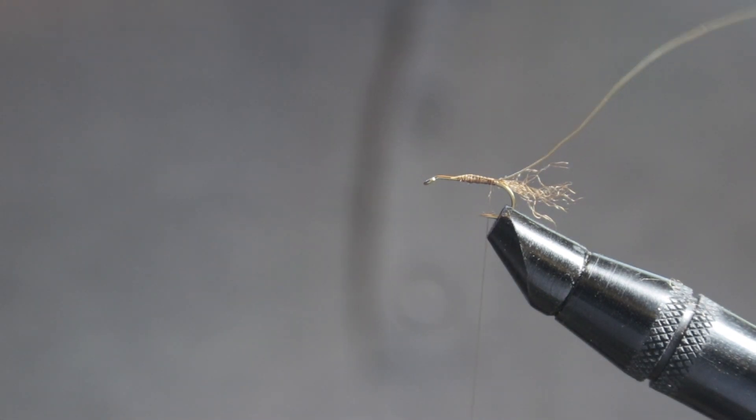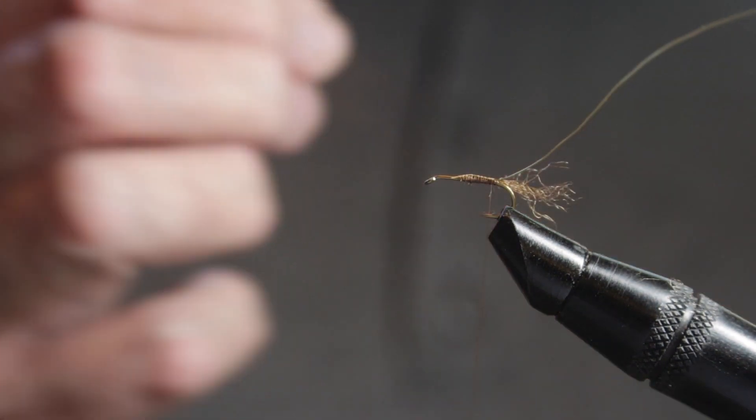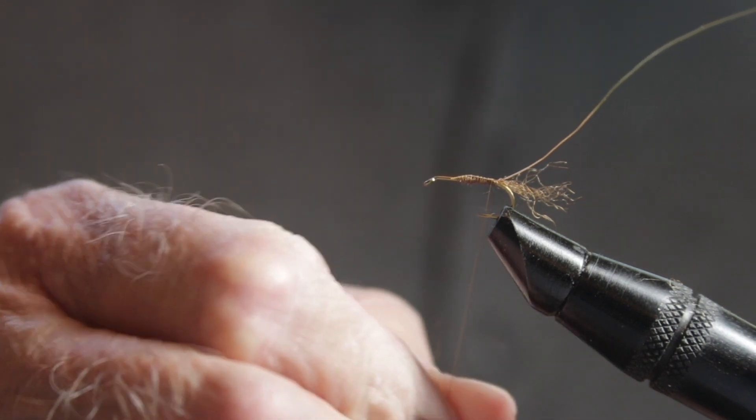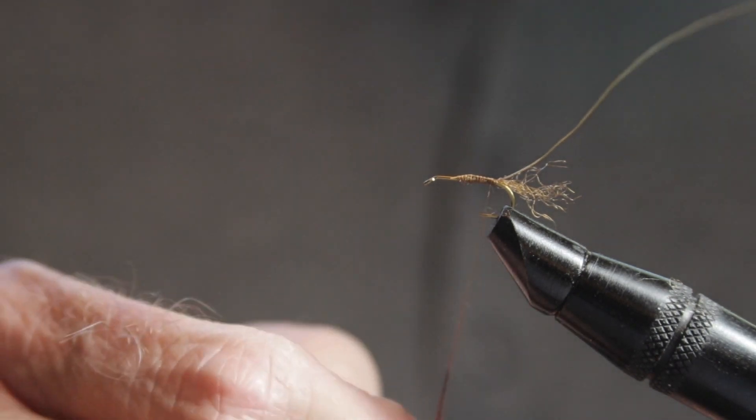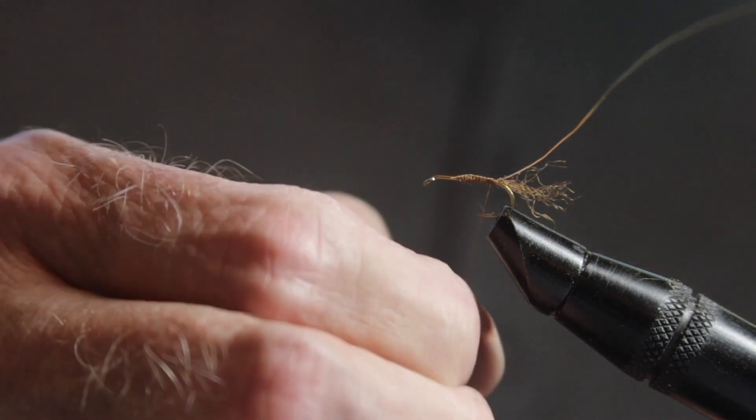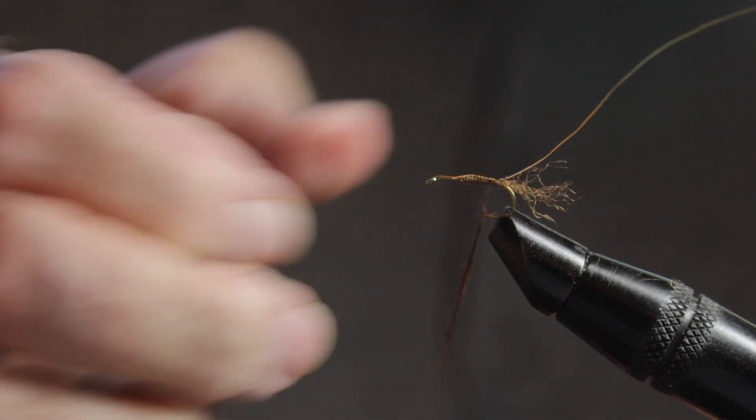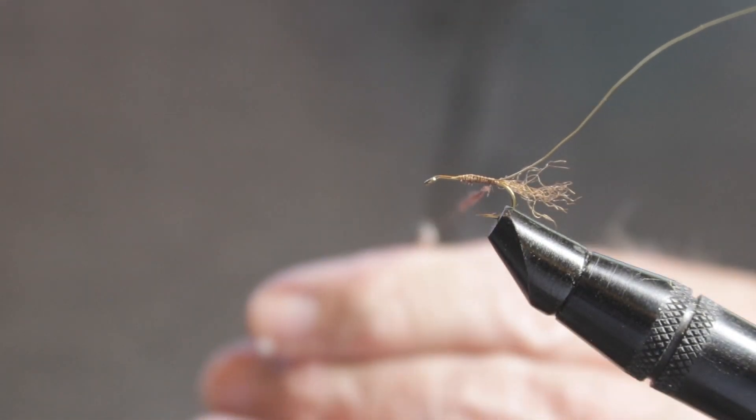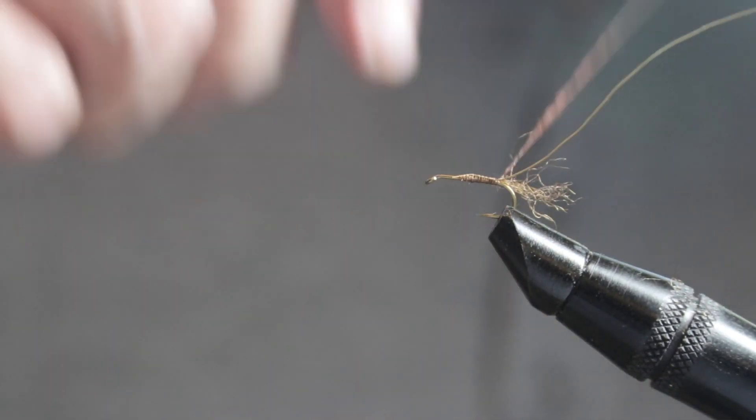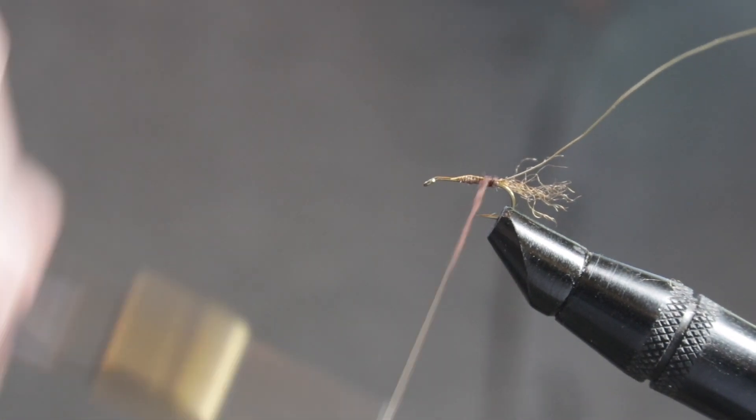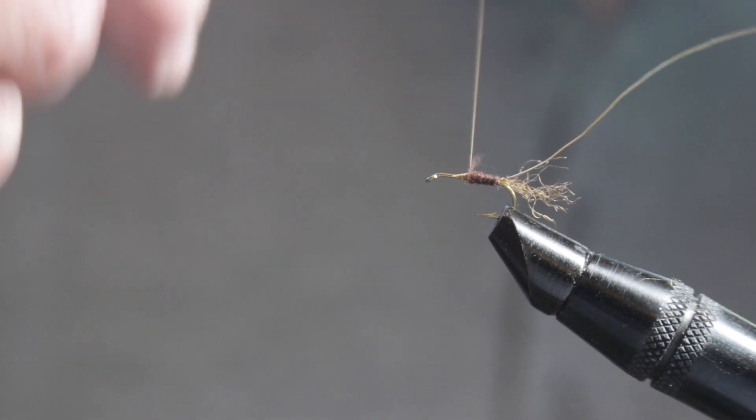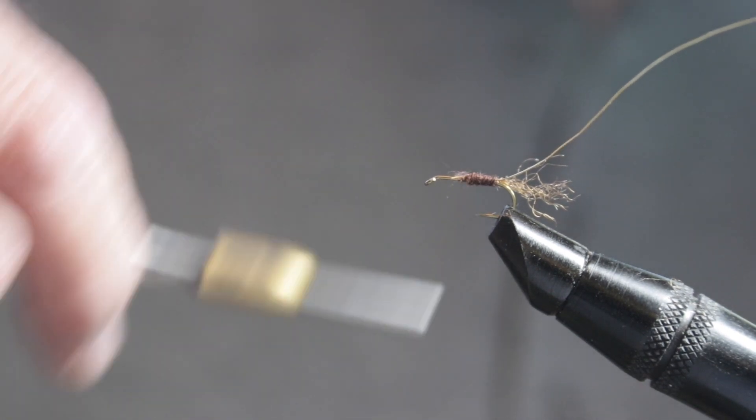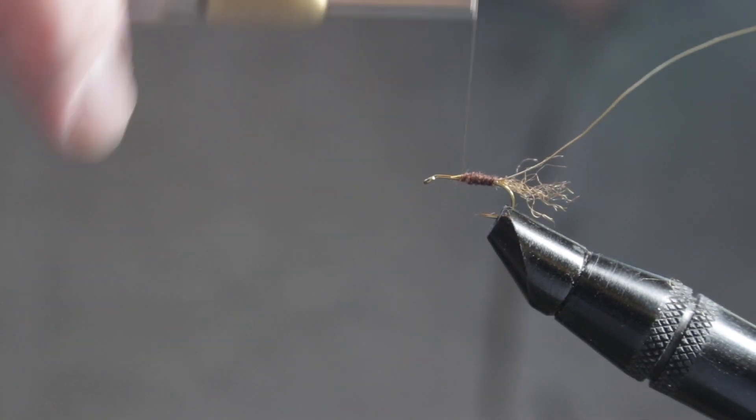After that's tied in, we're going to take some dark brown super fine dubbing. And once again, there's nothing etched in stone that says you have to use super fine. There's lots of dubbings out there that you can use. If you want it to be more buggy looking with more fibers sticking out, you could use other materials. You could use an antron type dubbing for a sparkle if you wanted. We don't feel that's necessary because the gold wire will give it some of the sparkle. And we'll wrap the dubbing up to the halfway point again. Make sure that's secure.